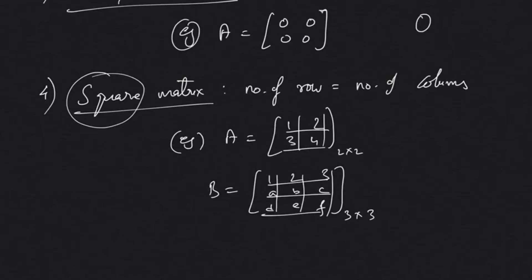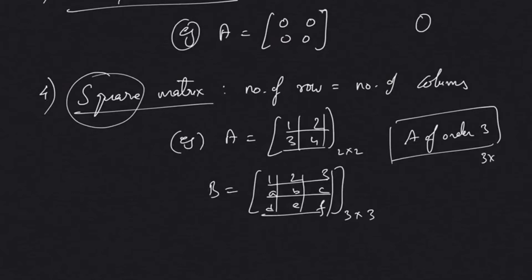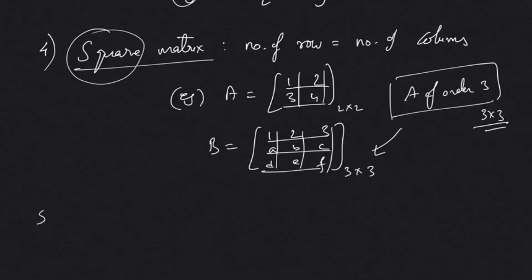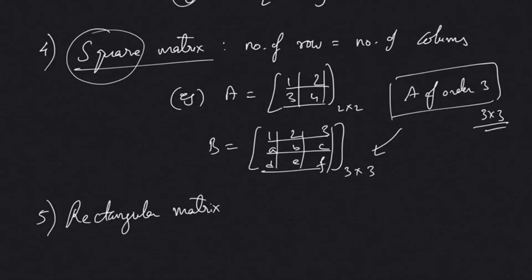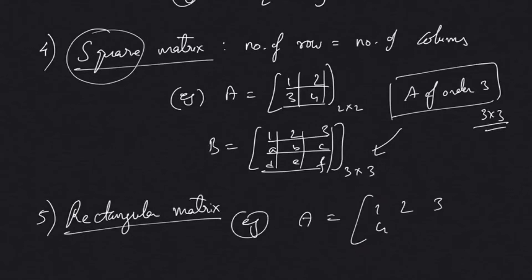Sometimes we just write a matrix A of order three, which simply means it is a 3 by 3 matrix. We also have a rectangular matrix. A rectangular matrix is one in which the number of rows is not equal to the number of columns — like 1, 2, 3, 4, 5, 6 — which has two rows and three columns.